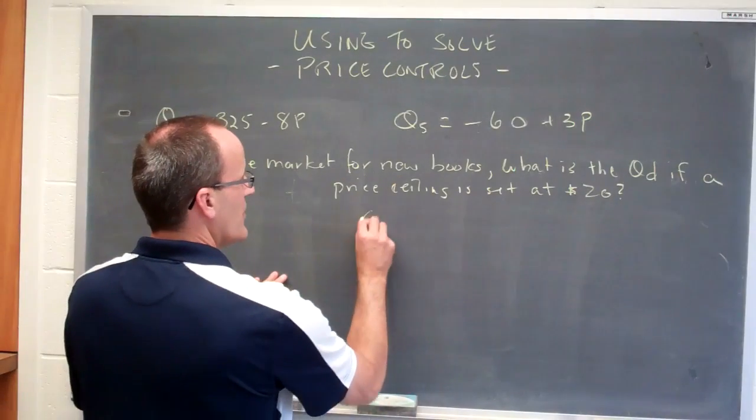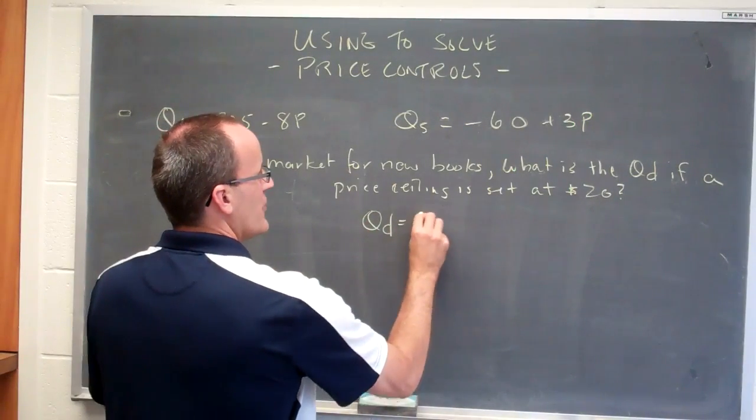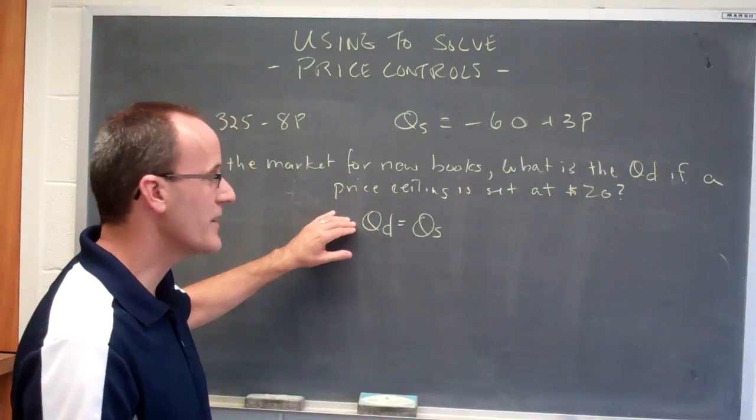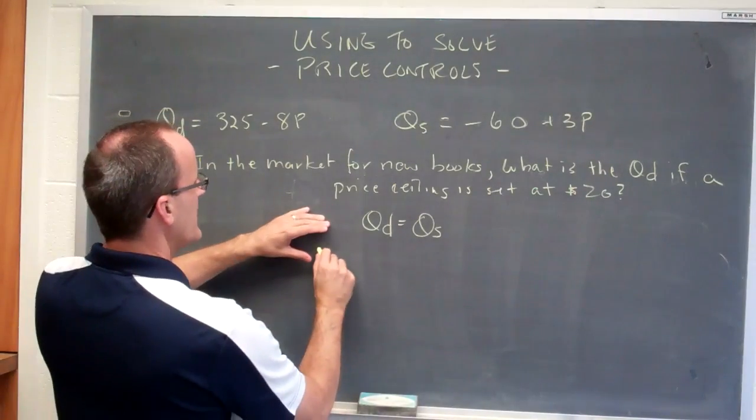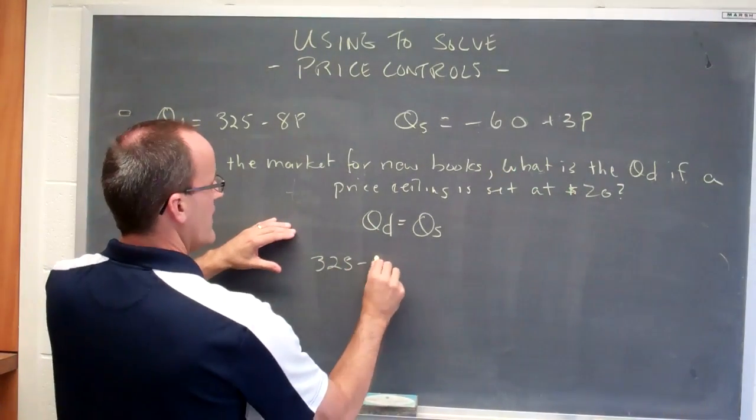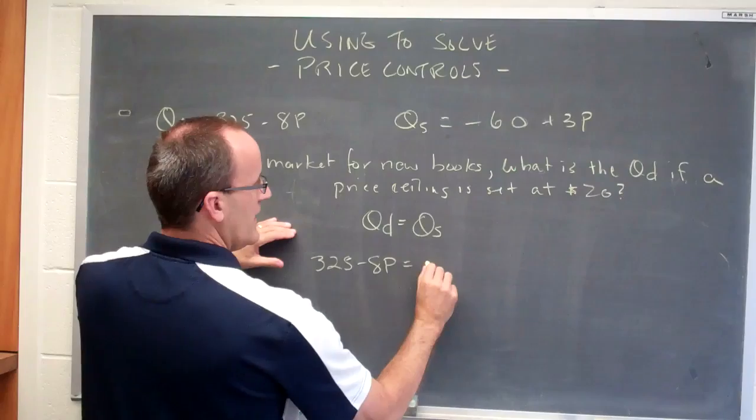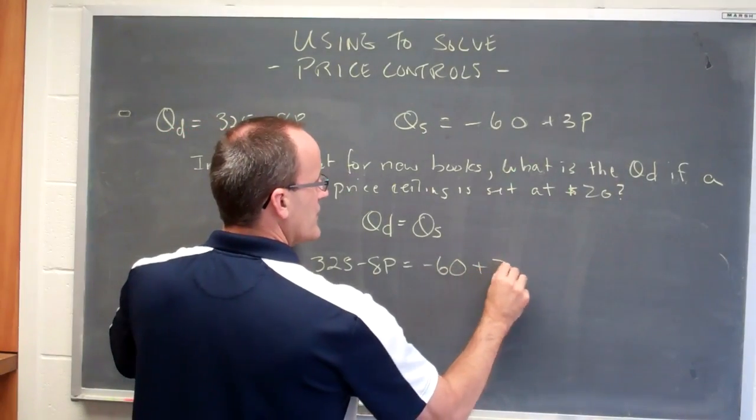Same process as before. You always want to figure out what the market clearing price is. So we'll set the quantity demanded, which is 325 minus 8p equal to minus 60 plus 3p.